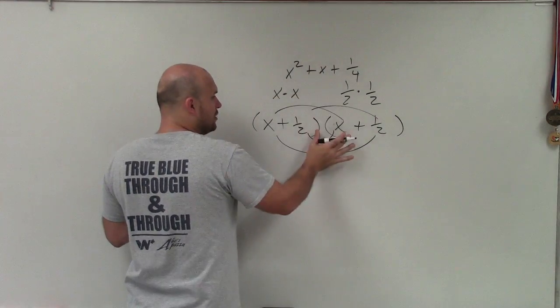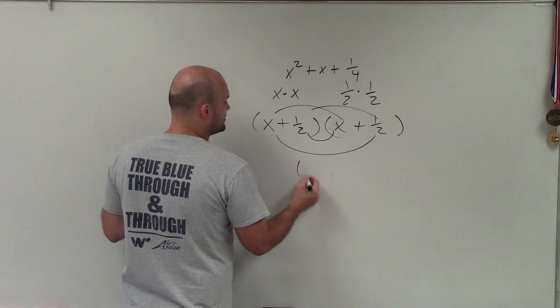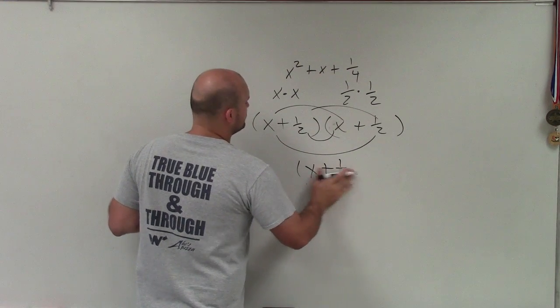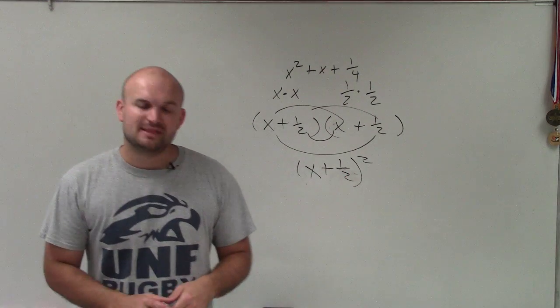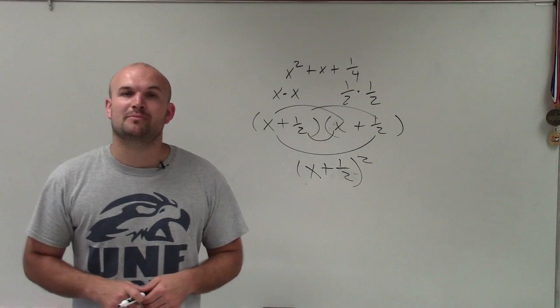this is a perfect square trinomial written as a product of its factors, which can now be written as a binomial squared. So there you go, ladies and gentlemen. That is how you factor a perfect square trinomial. Thanks.